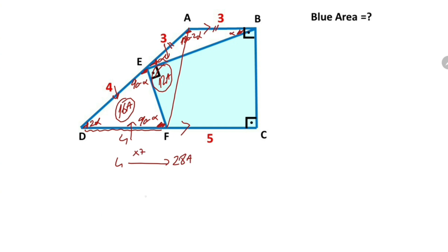And then if the area of triangle DFA equals 28a, that means when we connect points A and C, the area of triangle FAC must equal 25a, and then the area of triangle ABC must equal 21a.